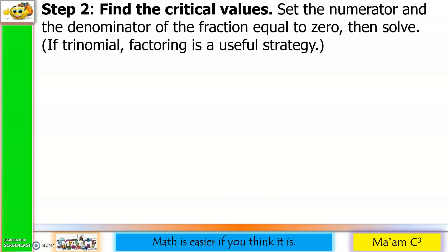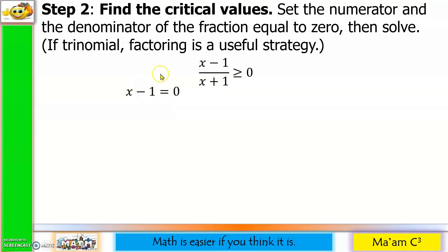Step 2: Find the critical values. Set the numerator and the denominator of the fraction equal to 0, then solve. If trinomial, factoring is a useful strategy. From our simplified rational inequality: x minus 1 equals 0, so x equals 1. And x plus 1 equals 0, so x equals negative 1.